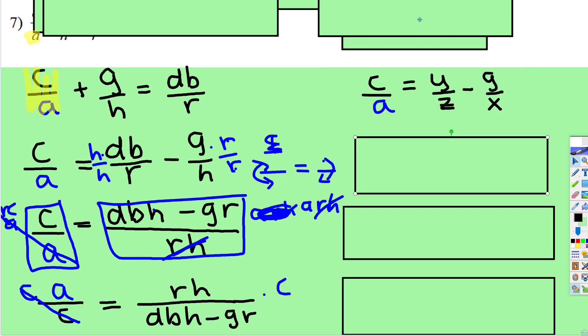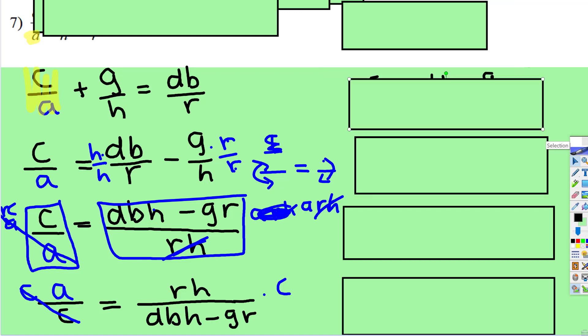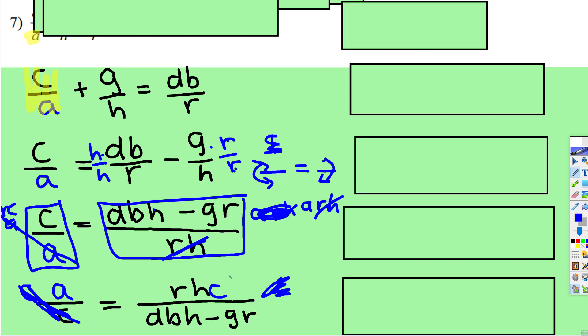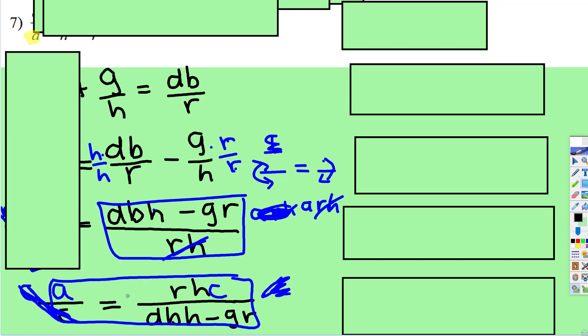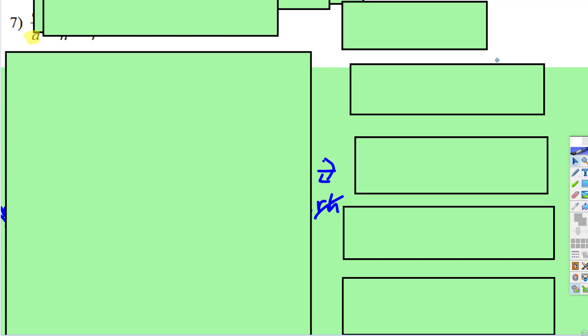Oh sorry, I was thinking that we had more to do over here. This is a different problem. So notice the answer will end up being a is equal to r times h times c. So this right here is the final answer for that one. Sorry that I paused there for a second.